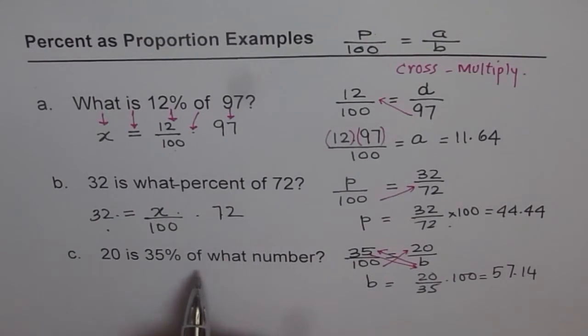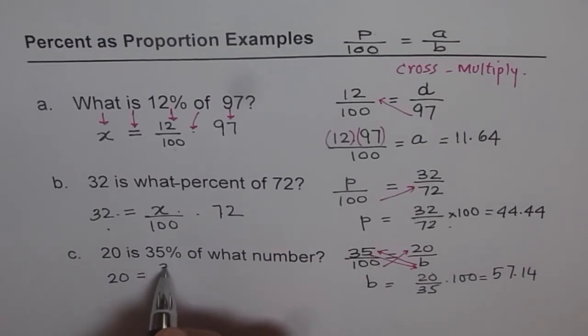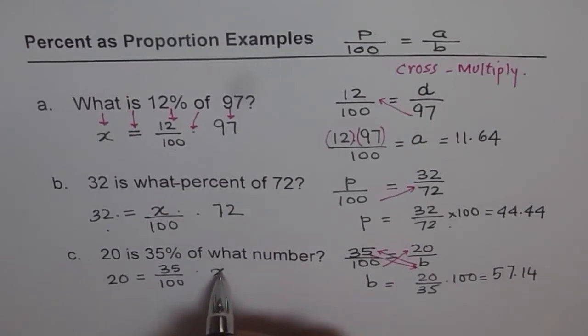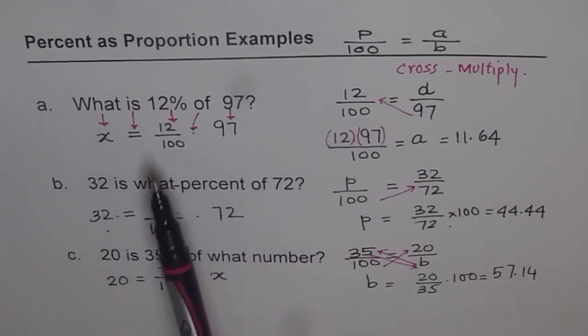20 is 35 percent of what number? We say 20 is means equal to. 35 percent means 35 over 100. Of times. What number x? The unknown. x should be equal to 20 times 100 divided by 35. You get it. So we have shown you how to do it as a percent. And now we are doing word problems. So you need to translate sentences into equation and then solve.